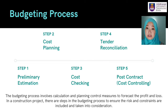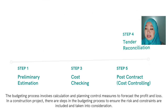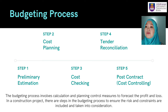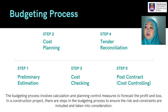There are five major budgeting processes involved: preliminary estimation, cost planning, cost checking, tender reconciliation, and post-contract or cost controlling. The budgeting process involves calculation and planning control measures to forecast profit and loss. In a construction project, there are steps in the budgeting process to ensure risks and constraints are included and taken into consideration.